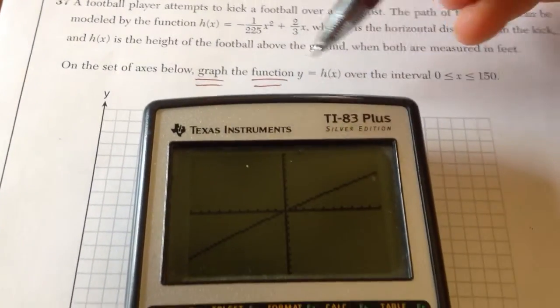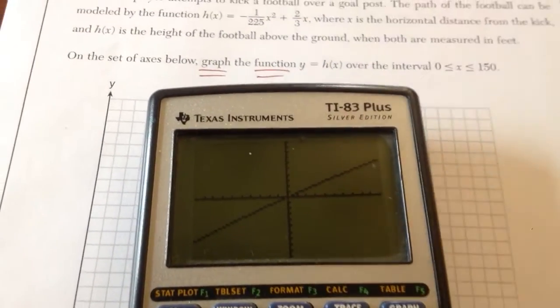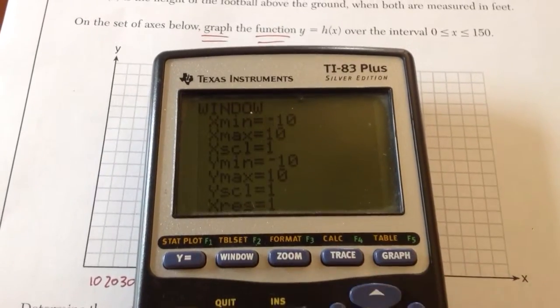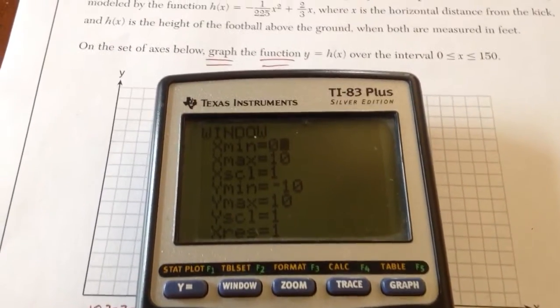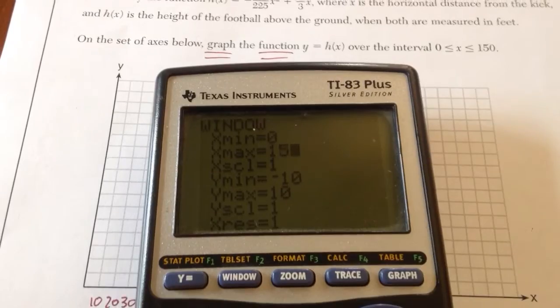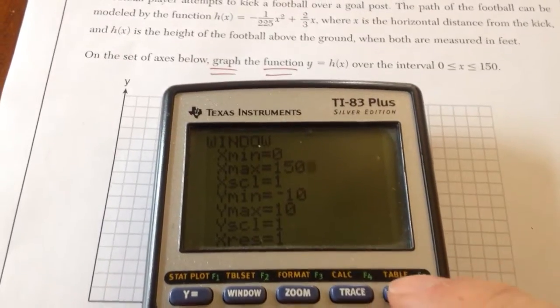They want you to graph on the interval from 0 to 150. So that means in my window, I want my minimum x value to be 0 and my maximum to be 150. Let's take a look at how this looks now.